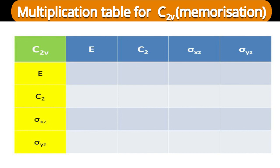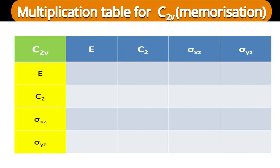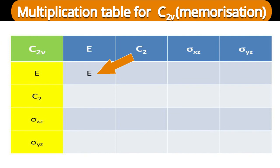Let us start construction of the multiplication table. Taking the first operation from the column — E — and first operation from the row — E: E into E. The result is E, the identity. Identity cannot change the operation to which it is multiplying; both are identity, so identity will remain as it is.